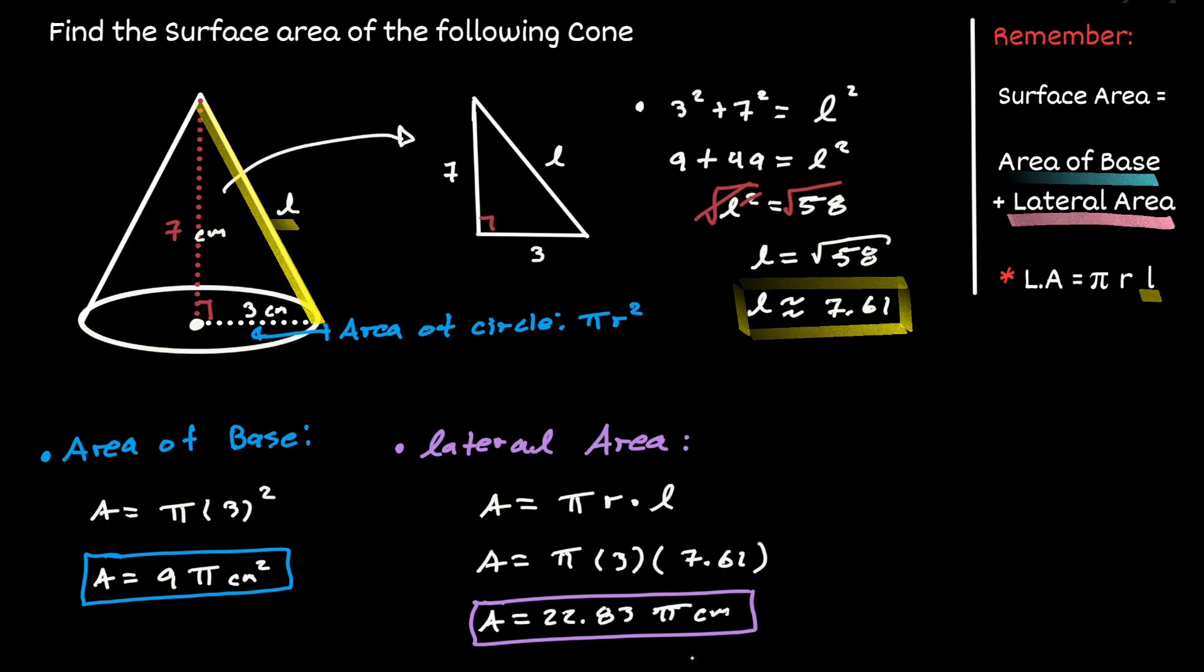Now we can add those values and obtain what we're looking for, which is the surface area, which is equivalent to 31.83 pi centimeters squared.